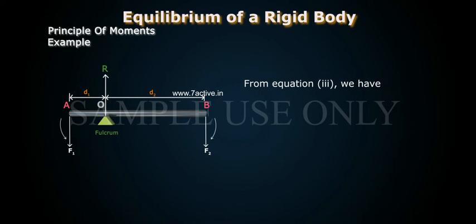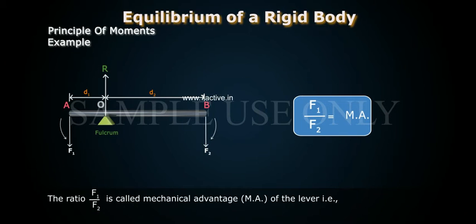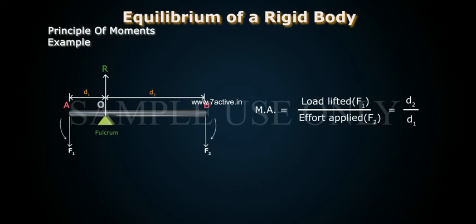From equation three, we have load into load arm is equal to effort into effort arm. The ratio F1 by F2 is called mechanical advantage, MA, of the lever. That is, MA is equal to load lifted F1 by effort applied F2, is equal to D2 by D1.